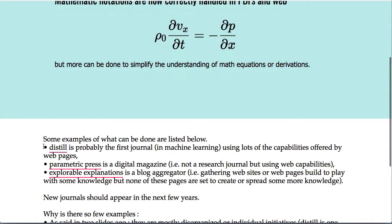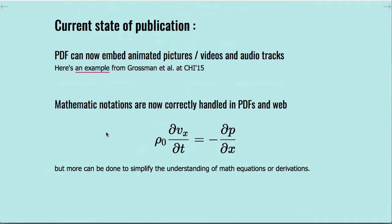And you can also find some more examples going to this link so I don't have too much time to discuss about them but Distill is probably the first journal in the field of machine learning who is using lots of capabilities or almost all capabilities offered by web pages. So have a look at this and you will have an example of what can be done for a journal.